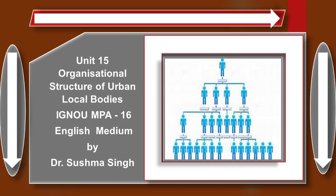We are going to discuss organizational structure. The first municipal government in India was set up as early as 1868, barely 88 years after the establishment of the East India Company, the place of honor being Madras. But it cannot be said that the urban municipal government has been a great success in India.